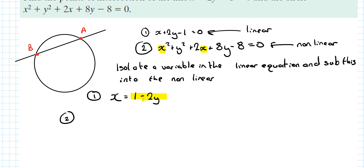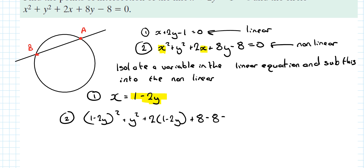Into equation two, wherever there is an x I'm substituting in (1 − 2y). So I get (1 − 2y)² + y² + 2(1 − 2y) + 8 − 8 = 0. Multiplying out: 1 − 4y + 4y² + y² + 2 − 4y + 8y.